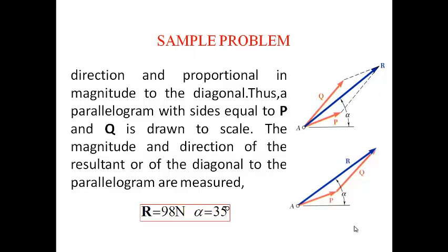Thus, a parallelogram with sides equal to P and Q is drawn to scale. The magnitude and direction of the resultant or the diagonal to a parallelogram is measured as resultant equals 98 N and alpha equals 35 degrees.